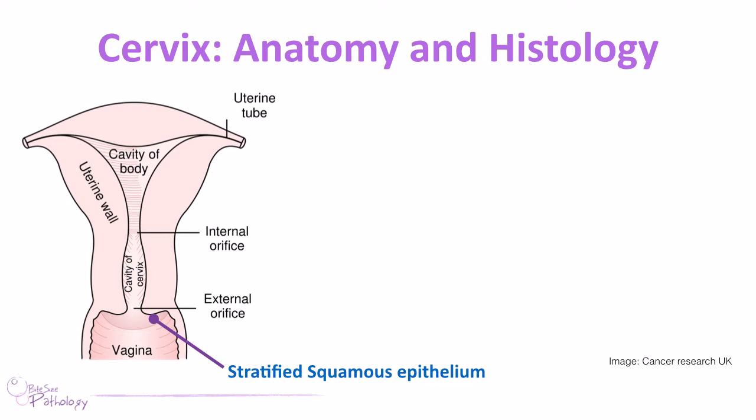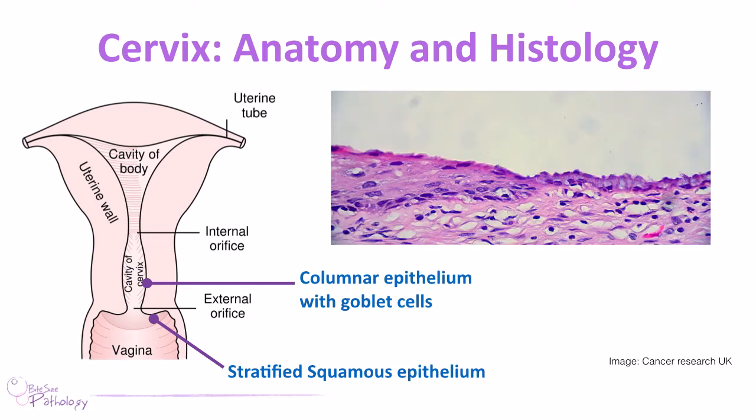The inner lining — the endocervix — is lined by columnar epithelial cells with goblet cells, and that's responsible for producing the mucus that forms the mucus plug in the cervix. There is a sharp transition where you change from stratified squamous epithelium to columnar epithelium, and we call this the transition zone or transformation zone — the technical term being the squamous columnar junction.